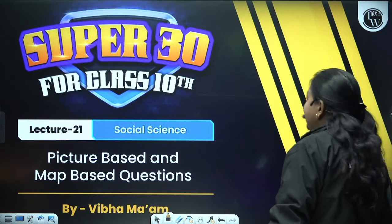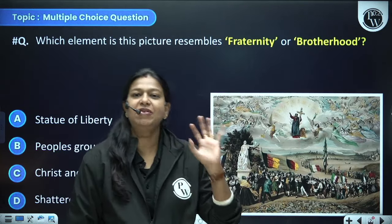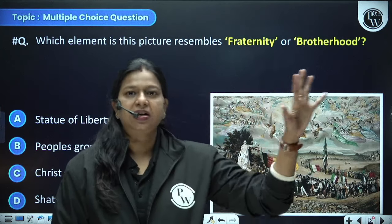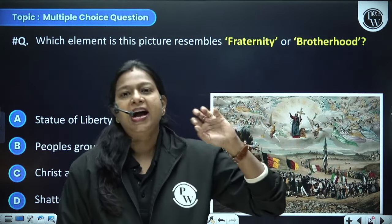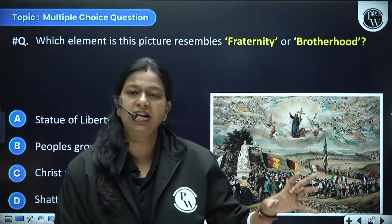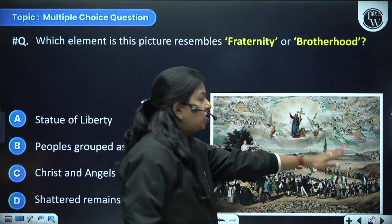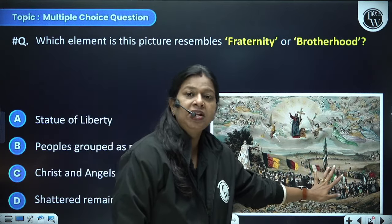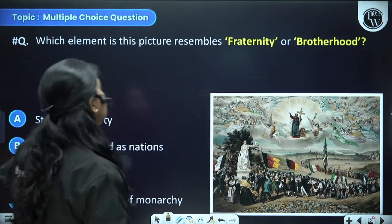Let us start our today's lecture with MCQs. We are going to have MCQs where you will be presented with a picture or a map and questions will be based on that. So let us start with the first one — a picture made by Frederick Soro, given in the chapter The Rise of Nationalism in Europe.